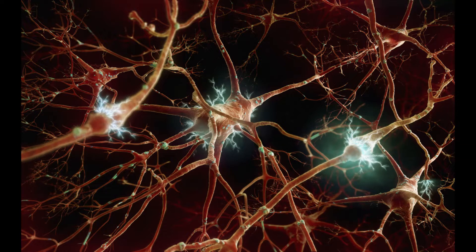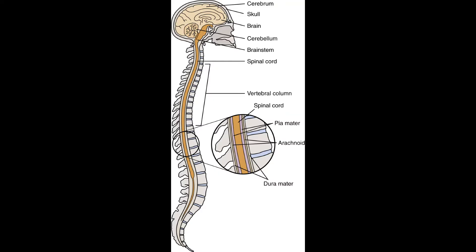It's not just the endocrine system that uses chemicals. The nervous system also uses neurotransmitters, which are chemicals that cross a synapse. The synapse is the gap between a neuron and another neuron, muscle cell, or gland.